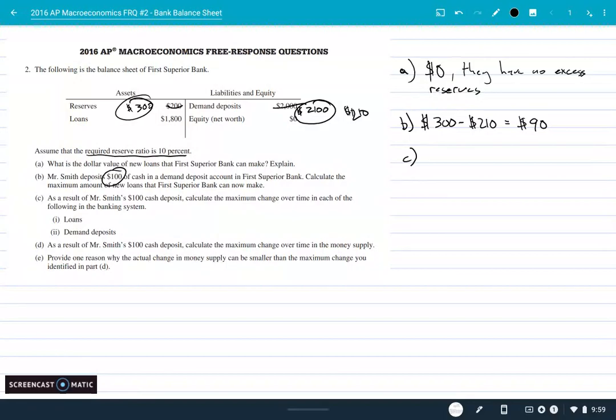Part C: as a result of Mr. Smith's hundred dollar cash deposit, calculate the maximum change over time in each of the following in the banking system. Now this is where you got to be a little bit careful. We have $90 that we can now lend out. This cash deposit was already money supply. We'll come back to that in a second because part D is gonna say what's the maximum change over time in the money supply.